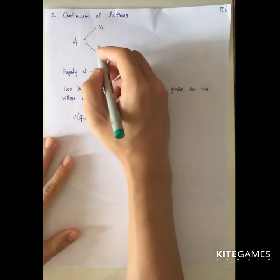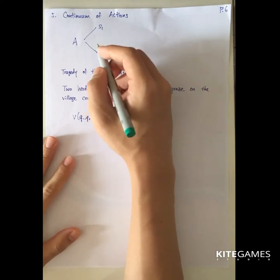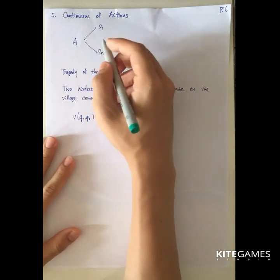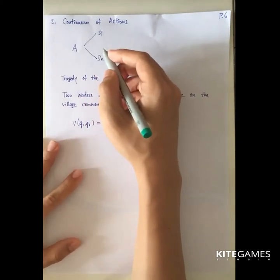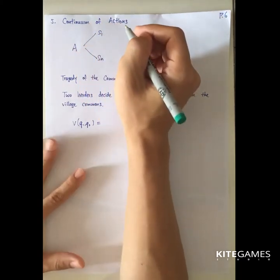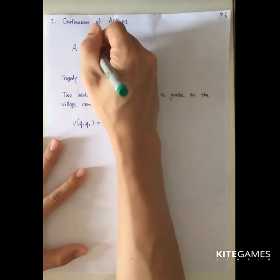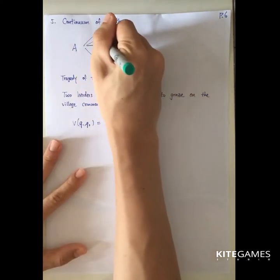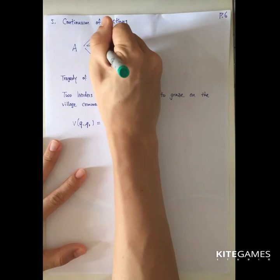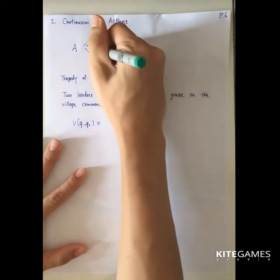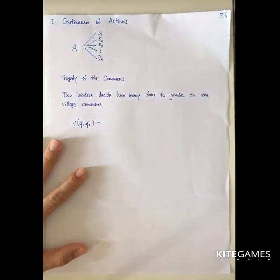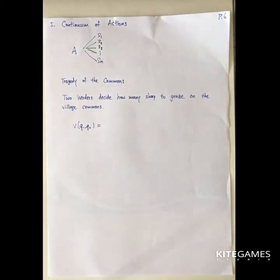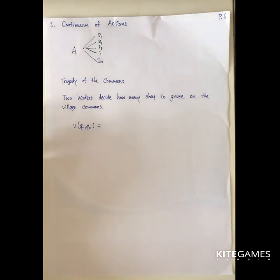Even in the penalty shootout, you can shoot to the center, upper right, or bottom right. So in most games in the real world, we have lots of strategies — maybe S2, S3, up to SN. So actually our decision is continuous, not only confined to a discrete number.